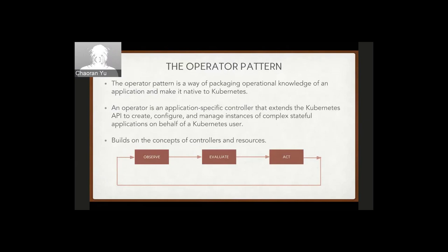It's an application-specific controller that extends the Kubernetes API, making management, creation, and configuration easier. The way it works is an event loop that constantly runs — the operator keeps observing and listening for events, like creation of a new custom resource. Once something happens, the operator evaluates the current status, decides what to do, and acts on it. This event loop keeps going continuously.